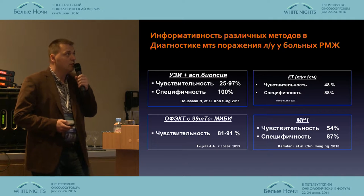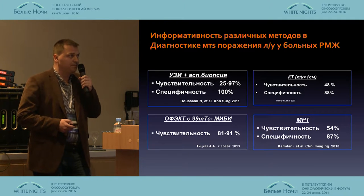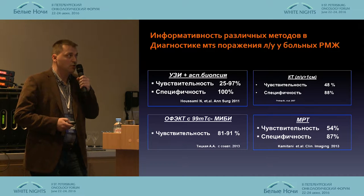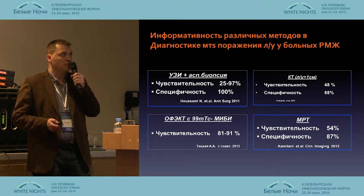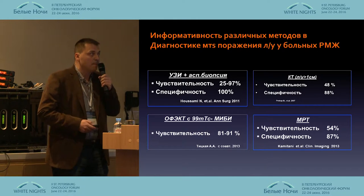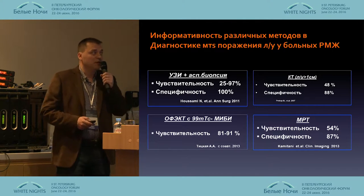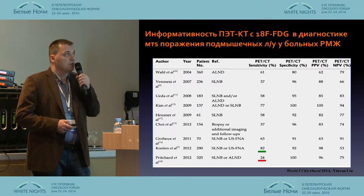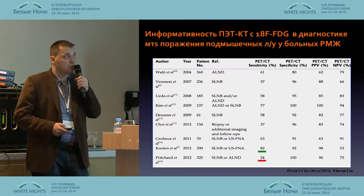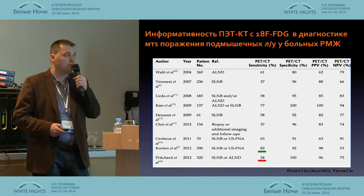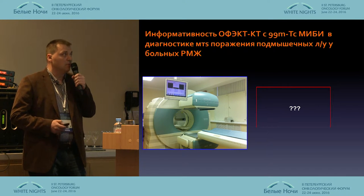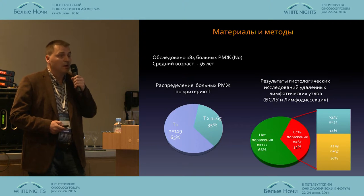We looked at the information from different methods of diagnostics of lymph node lesions. The figures vary: ultrasound plus aspiration biopsy specificity from a large meta-analysis was up to 97%. Single CT specificity was 81–91%, with sensitivity 43% and specificity 83%. In general, specificity is high, but sensitivity varies considerably, from 24% to 82%.